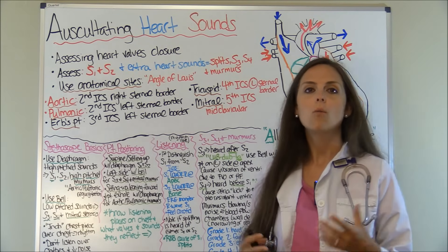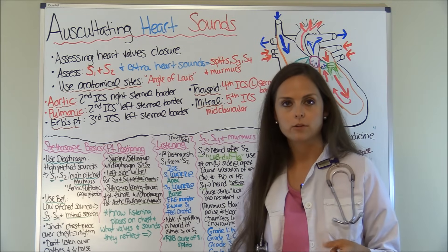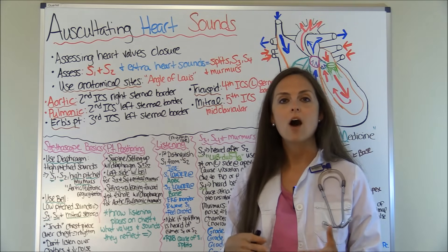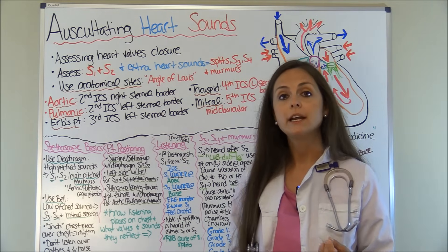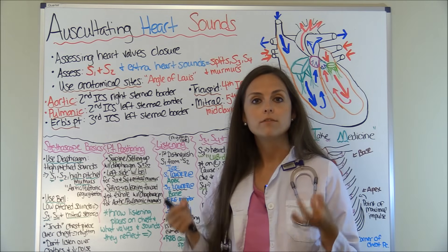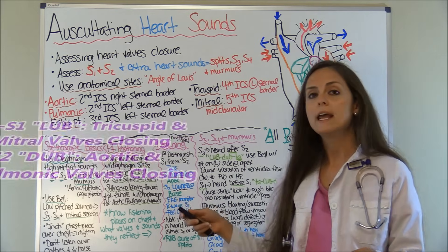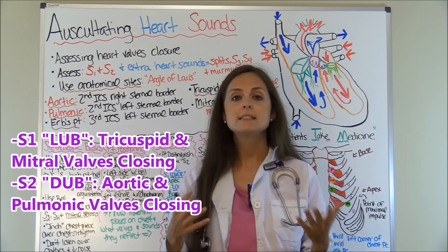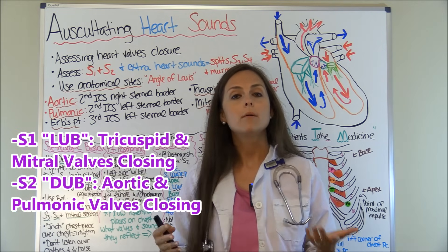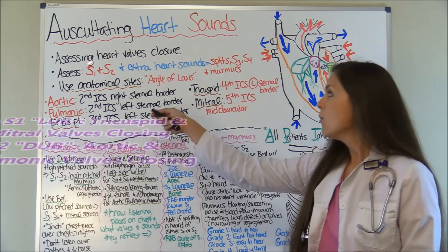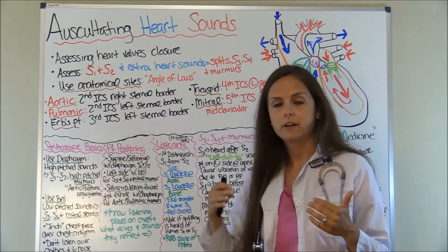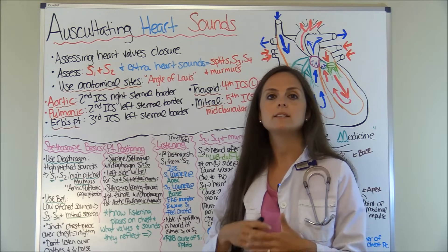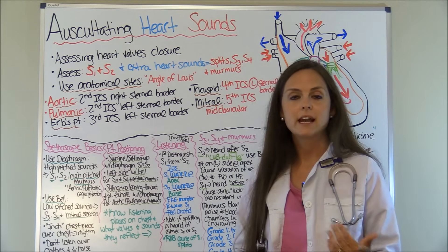First let's cover the basics. Why do we listen to heart sounds? We want to make sure the rhythm is regular, count the rate, but one of the big things is assessing how those heart valves are closing. S1 and S2 are valve sounds — S1 is your tricuspid and mitral valves closing, and S2 is the sound of your aortic and pulmonic valves closing. You'll also be listening for extra heart sounds like S3 and S4.